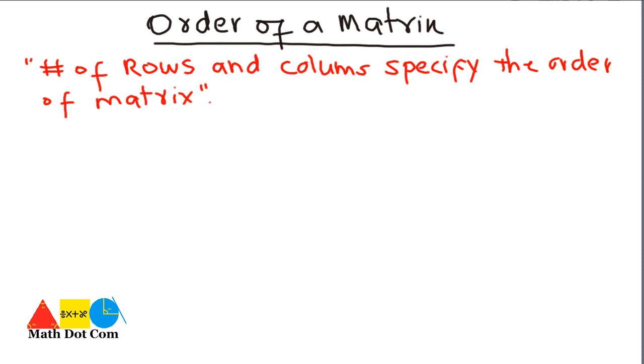Order of a matrix refers to the number of rows and columns that specify the order of a matrix. We have a general matrix here. Matrix is represented by A and these are the elements of the matrix.